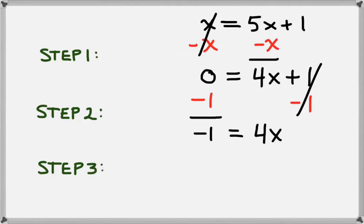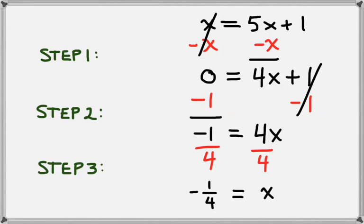Finally, what we need to do is get x by itself. It's multiplied by 4, so we need to divide by 4. We need to do that to the other side as well. That leaves us with x on the right hand side, and then negative 1 fourth on the left hand side. So our answer is x equals negative 1 fourth.